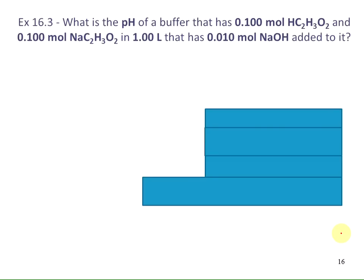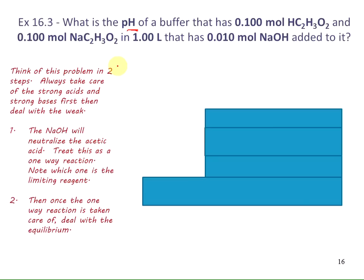Here's an example: find the pH of a buffer with 0.1 mol acetic acid and 0.1 mol sodium acetate in 1 liter, after adding 0.01 mol sodium hydroxide. We think of this problem in two steps — always take care of strong acids and strong bases first, because they completely dissociate. Then deal with the weak equilibrium system. We don't want to handle something that can shift and then add something that causes it to shift again.